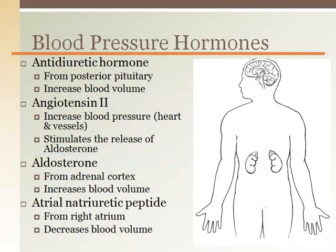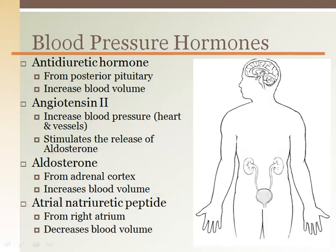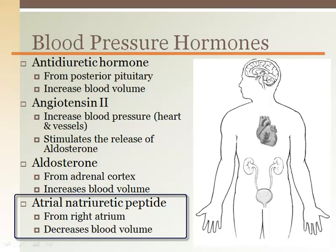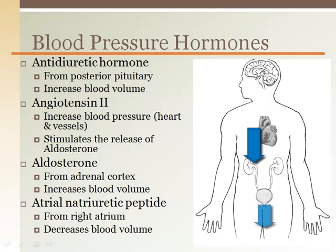Angiotensin 2 is produced through a series of chemical conversions starting with the kidney releasing renin. It has a multitude of effects that work together to dramatically increase blood pressure, including vasoconstriction, stimulating thirst to increase volume, and increasing the force of cardiac contraction. It also stimulates release of aldosterone from the adrenal cortex (zona glomerulosa region), which increases blood volume similarly to antidiuretic hormone. Atrial natriuretic peptide, released from the right atrium when it is stretched by excess volume, causes vasodilation and targets the kidney to release more water (diuresis), thereby decreasing blood pressure and volume.